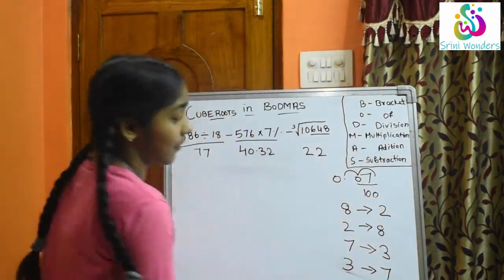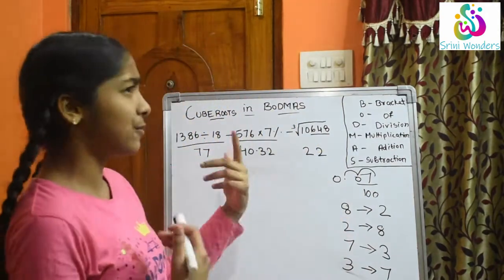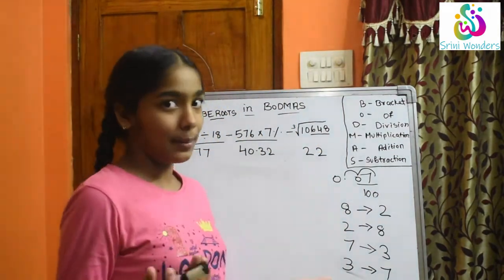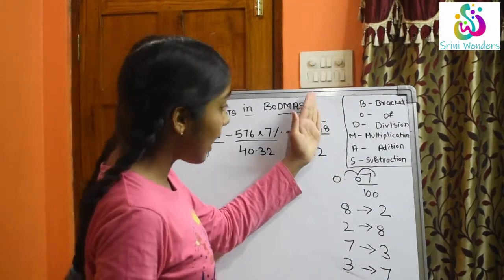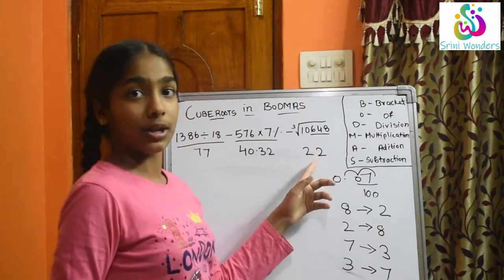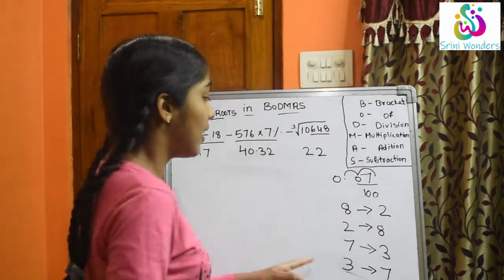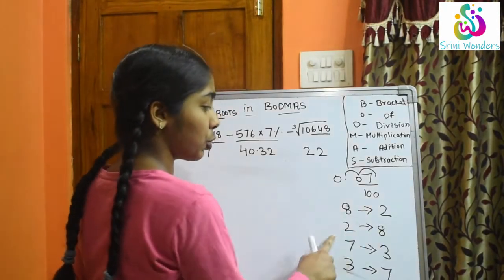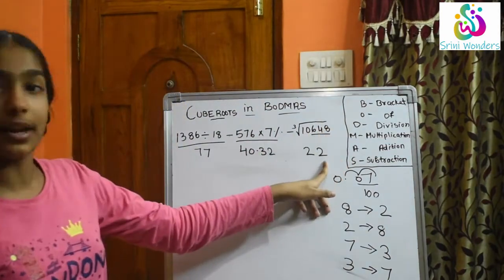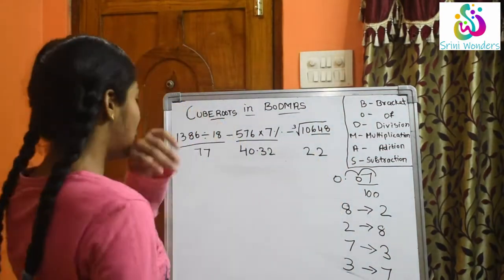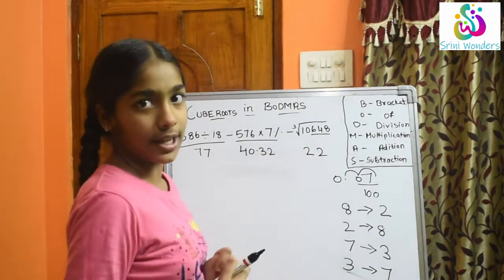If 3 comes we write 7. The remaining digits 6, 4, 8 — we write those digits as they are and take the last number only for our second part of the answer. If 8 comes write 2, if 2 comes write 8, if 7 comes write 3, if 3 comes write 7. Here 8 came, so we write 2. So 2 is our answer for the second digit, giving cube root = 22.